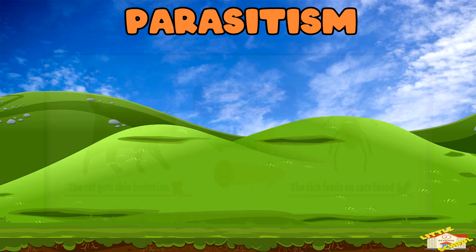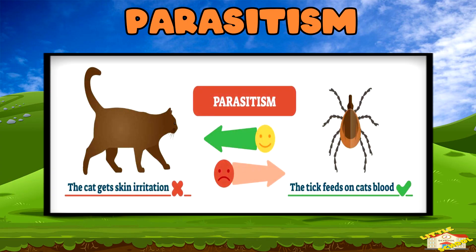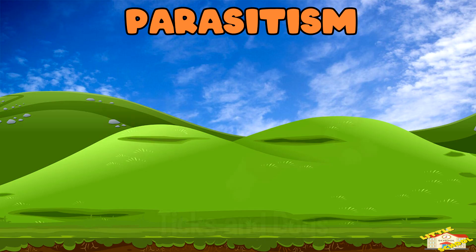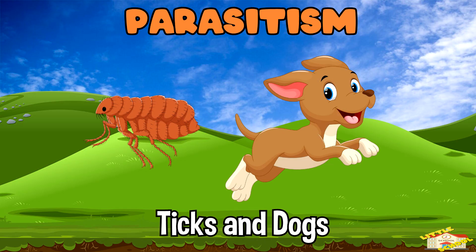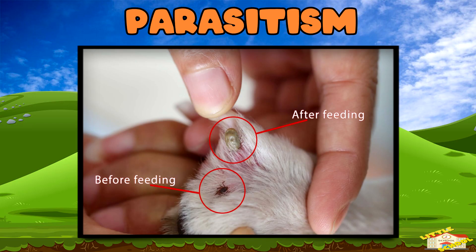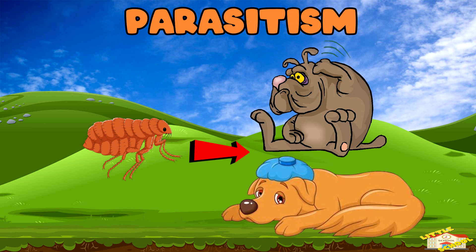Parasitism. In parasitism, one partner benefits but the other gets hurt. For example, ticks and dogs: ticks bite into a dog's skin and drink its blood. The tick gets food, but the dog could get itchy or sick.